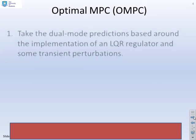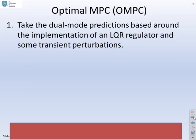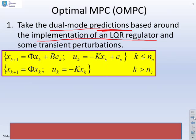How did we define, then, an optimal predictive control law? We took what were called dual-mode predictions, so predictions based around the implementation of an LQR regulator with some transient perturbations to the input trajectory. So, in other words, you'll see the control law was given as u equals minus kx plus c during transients, and just u equals minus kx asymptotically. And that's why we called it dual-mode.